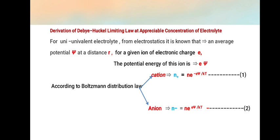For uni-univalent electrolyte, for example, if it is sodium chloride, from electrostatics we know that the average potential ψ at a distance R for a given ion of electronic charge e, the potential energy is given by eψ, where e is the electronic charge and ψ is the potential.